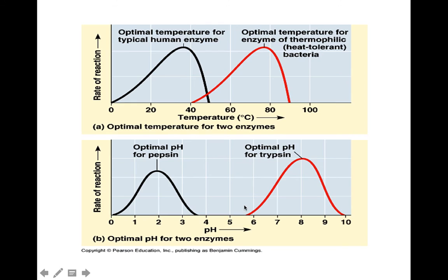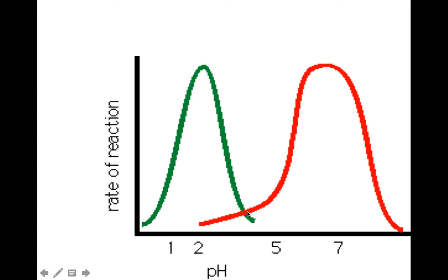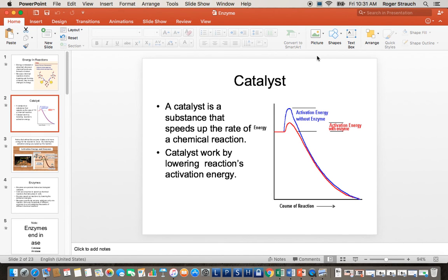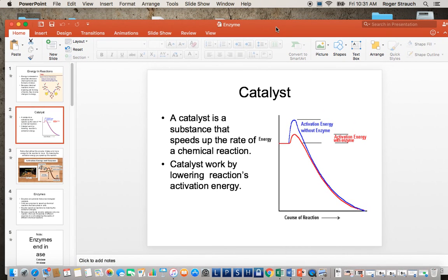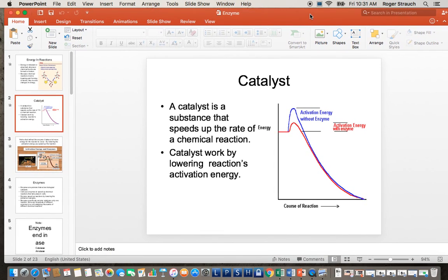Here are some more graphs just to practice and look at. For the red line, the optimum pH is going to be right about 7. Same thing with the temperature graph. And that is all she wrote — that is it. I'll put the PowerPoint on Edmodo along with this video. Tuesday, don't forget, meet in the library computer lab. We'll talk about enzymes, let you finish the lab, and then you'll start a computer web quest about enzymes. Hope you all have a great rest of your weekend — we'll see you Tuesday.